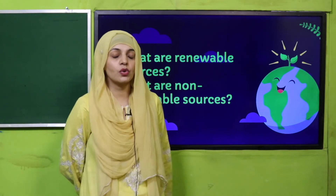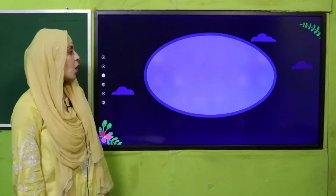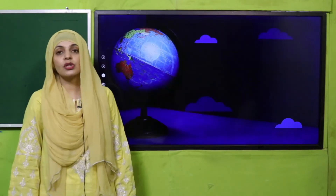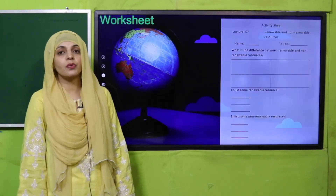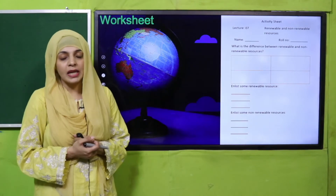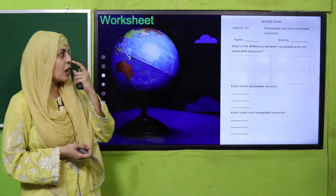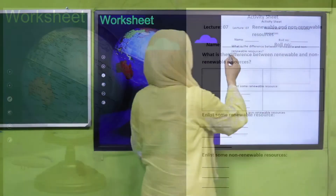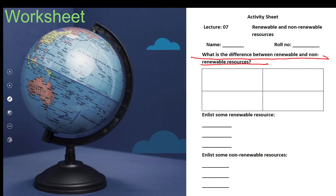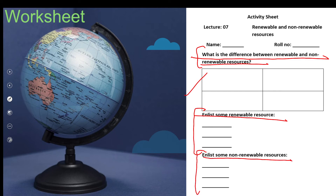Now is the time for practice. Download this worksheet from the description box below this video, or you can get it in print form from your teacher. Write down your name and roll number. The questions are: what is the difference between renewable and non-renewable resources? List some renewable resources and list some non-renewable resources. You can take help from the book. Pause the video and quickly finish it.